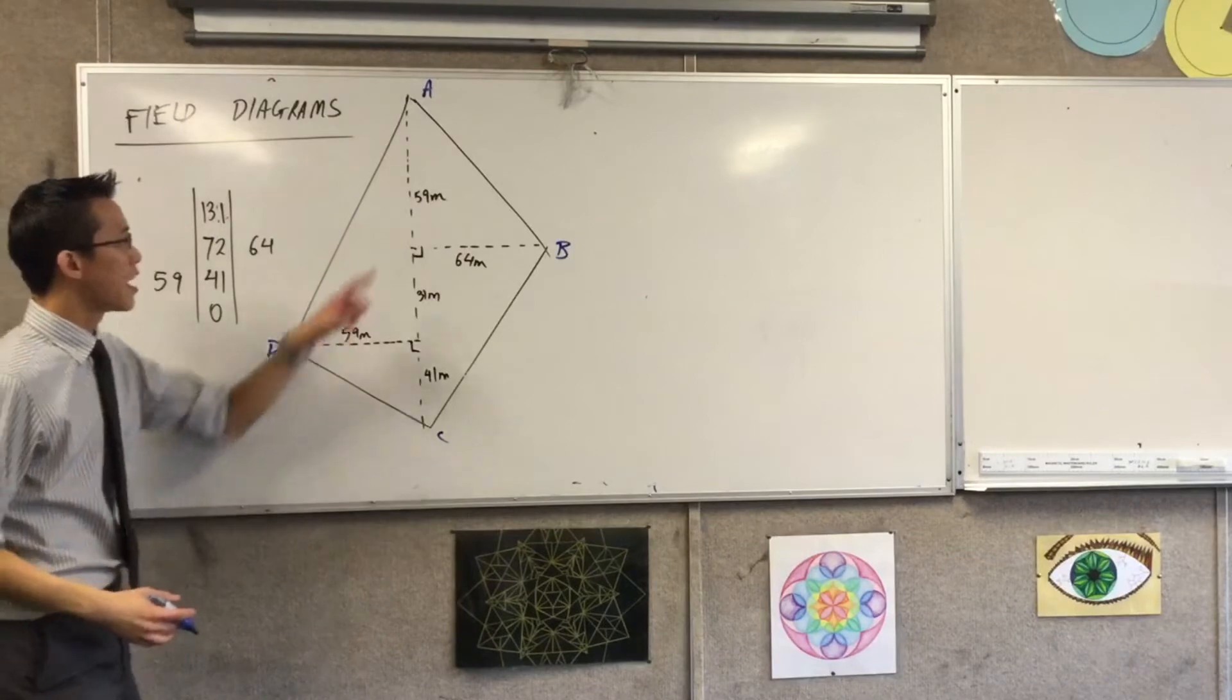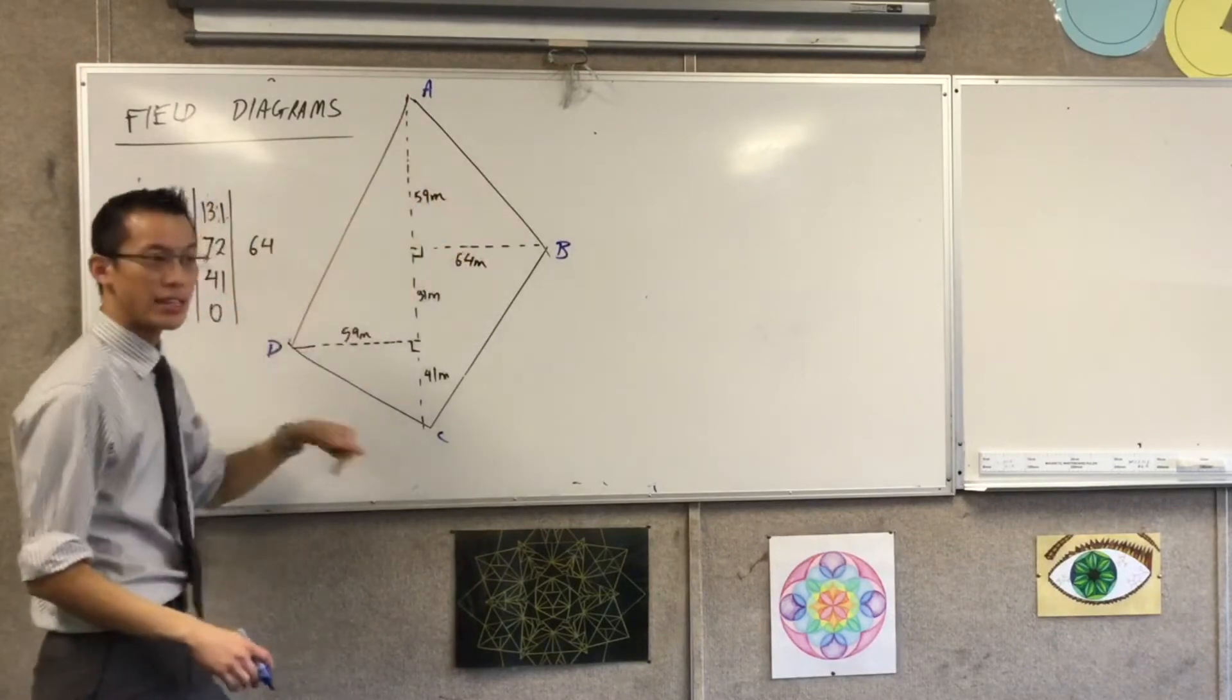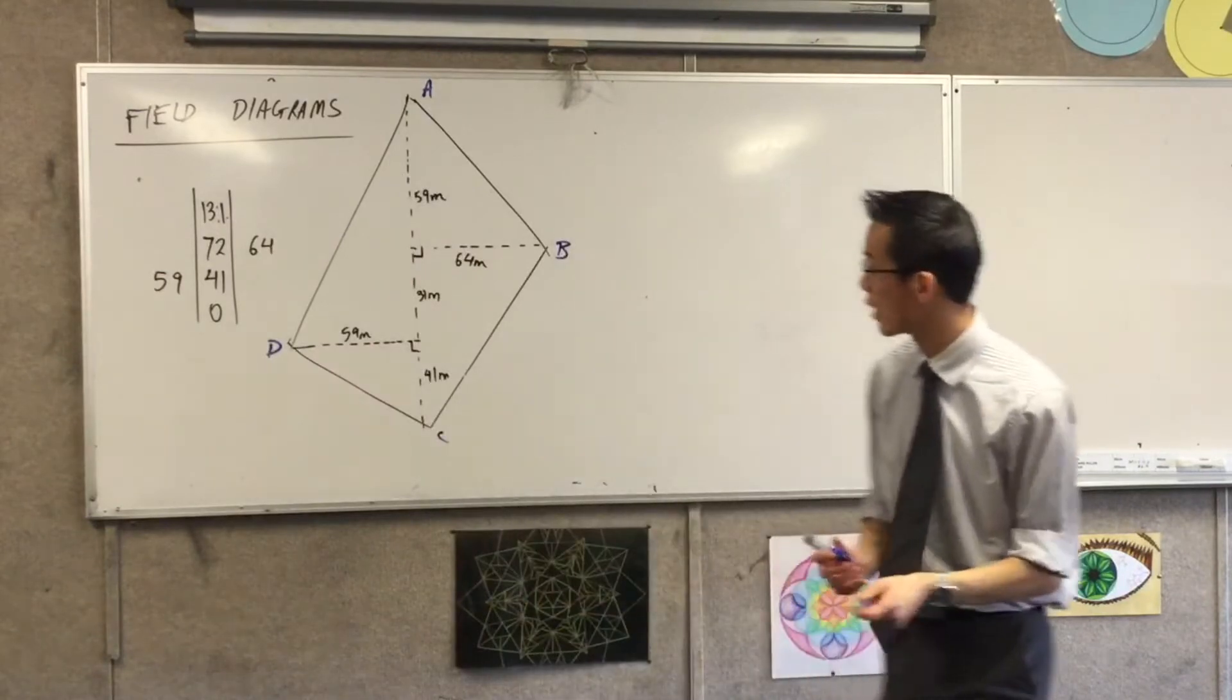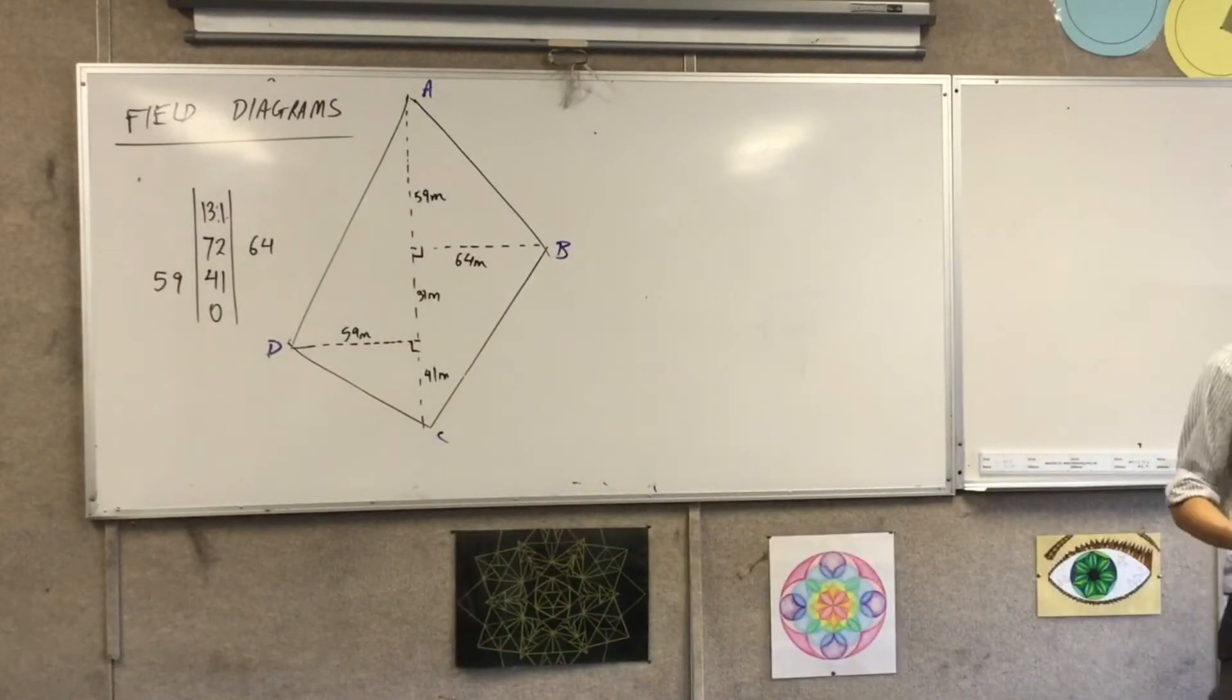If I want a perimeter, then I'm going to need to look at each of these lengths individually. But thankfully, and this is the reason why the traverse segment is the way it is, every one of those lengths AB, BC, CD, etc., they're all in right-angled triangles. They're all the hypotenuse of a right-angled triangle.